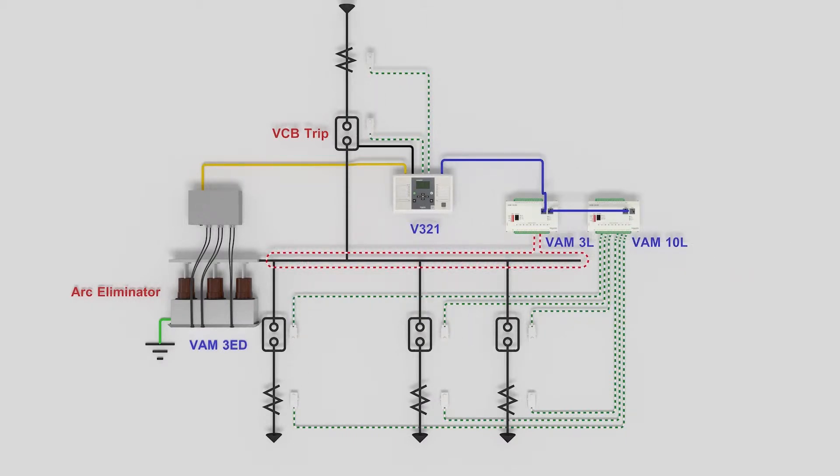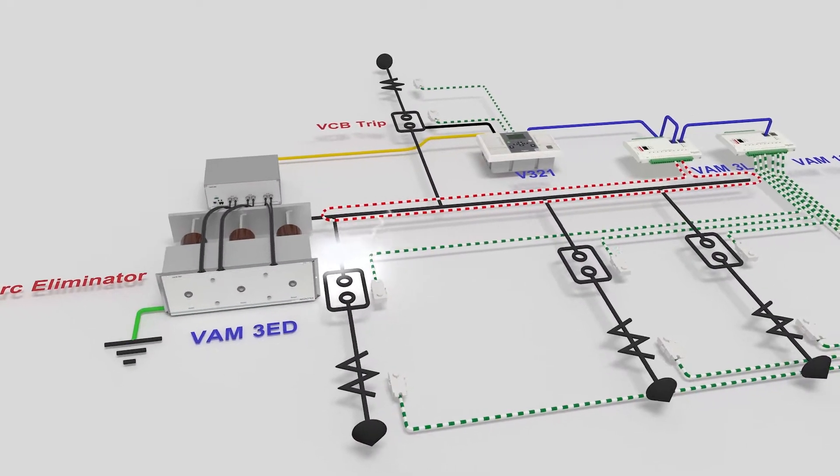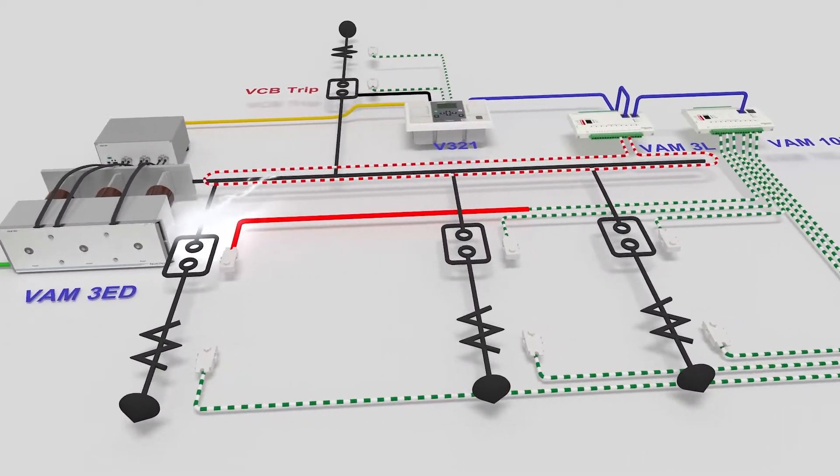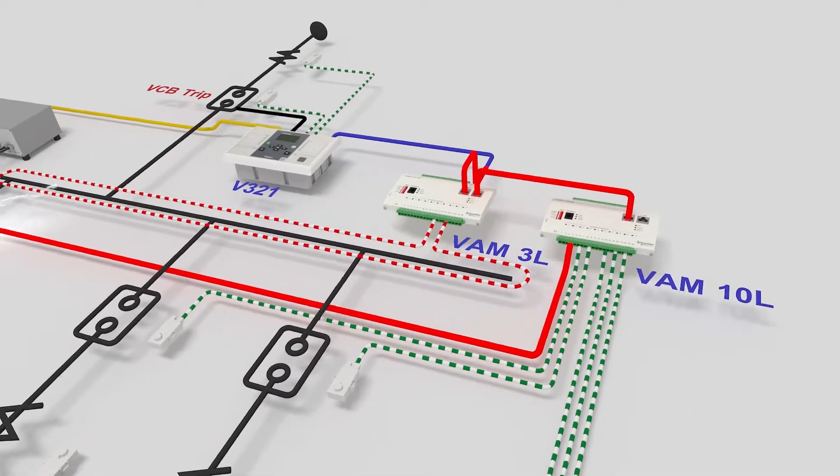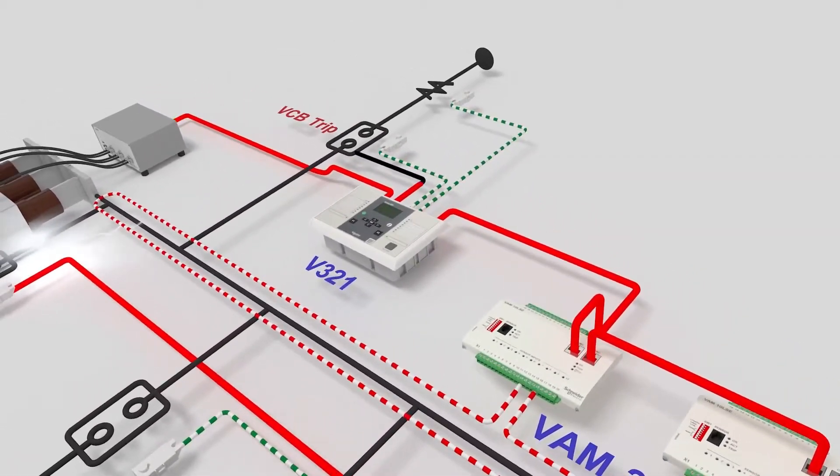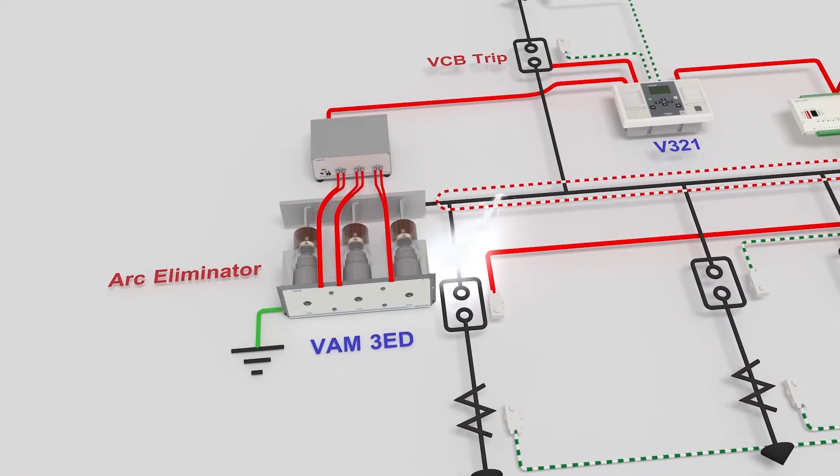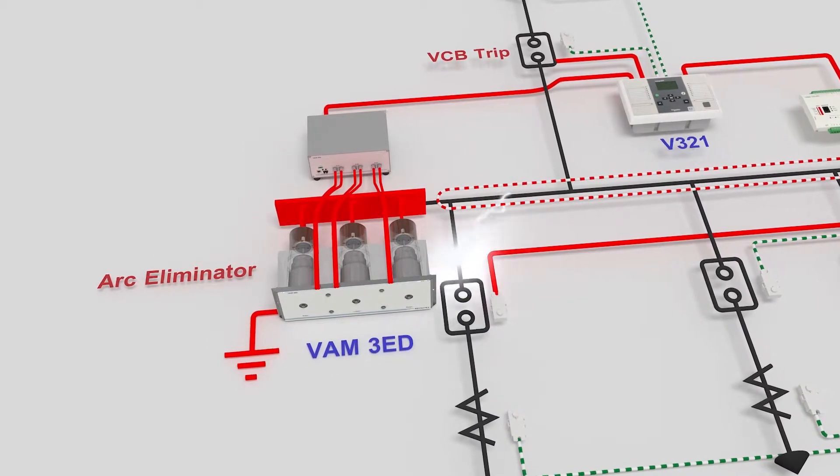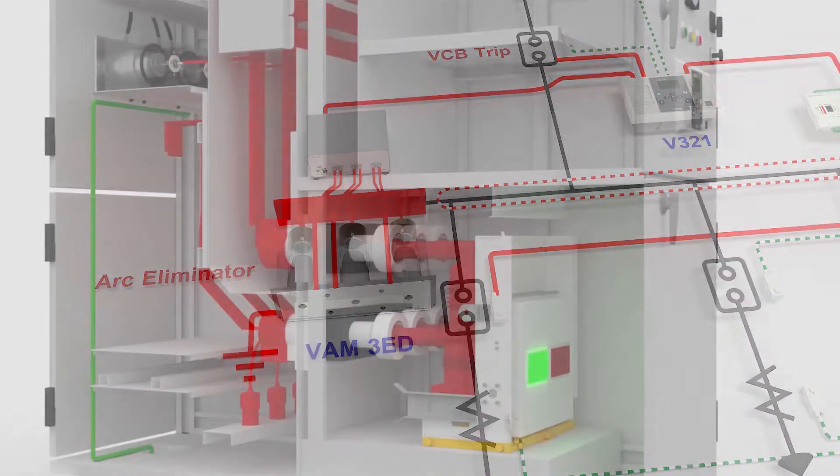If it is recognized as an arc accident, the arc eliminator and the main circuit breaker are simultaneously commanded, and the arc eliminator is operated to remove the arc, and at the same time, the breaker is operated to shut off the main circuit power. Three phases are short-circuited to induce grounding, thereby eliminating the arc and protecting human lives and facilities.